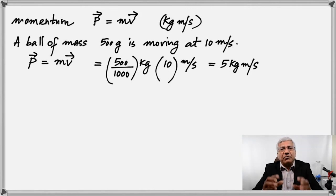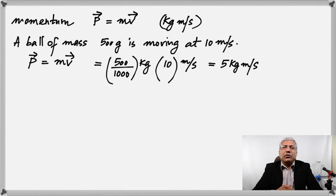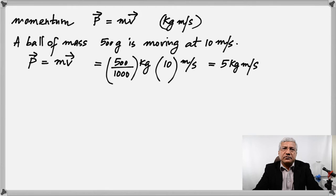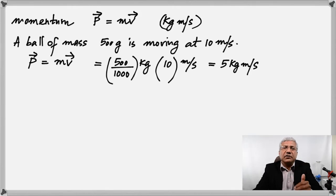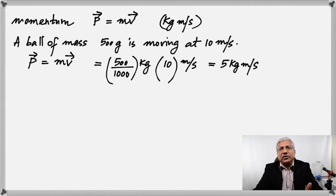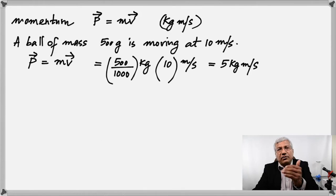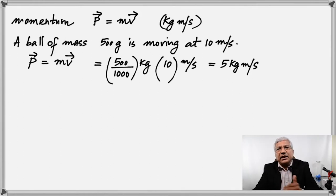Remember that momentum is a vector. Whatever is the direction of velocity, that will be the direction of momentum. So if this ball was initially moving towards the east, the momentum will also be towards the east. The answer is 5 kilogram meter per second to the east.